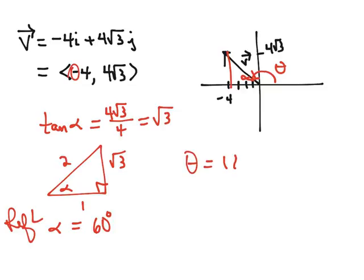That means that theta would be 180 degrees minus 60 degrees, which is 120 degrees. And that is the direction angle for vector v.